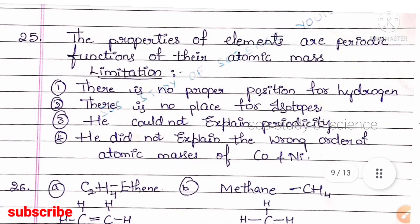Question 25: state Mendeleev's periodic law and write any two limitations of his periodic table. The law states that the properties of elements are the periodic functions of their atomic mass. Two limitations are: there is no proper position for hydrogen, and there is no place for isotopes.